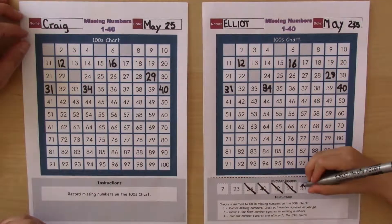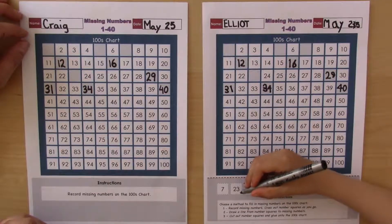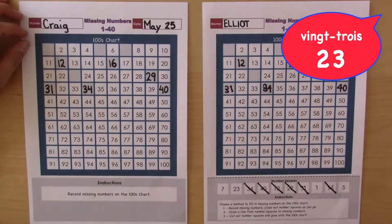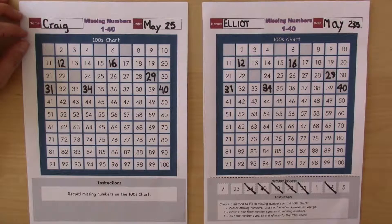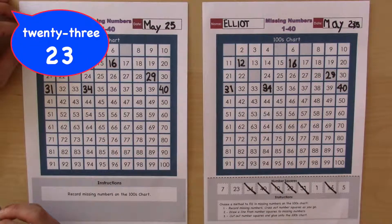Okay, lovely. And what's next? This one. What's that called? Vingt-trois. How do we say vingt-trois in English? Twenty-three.